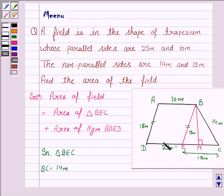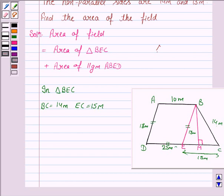Since AB is parallel to DE, therefore DE is 10 meters, and ABED is a parallelogram. Therefore, the opposite sides are equal, and hence AB is equal to DE is 10 meters. Therefore, EC will be 15 meters, and BE is equal to 13 meters which is equal to AD.